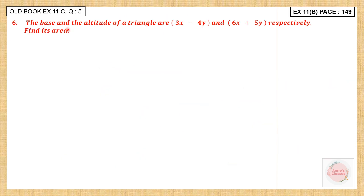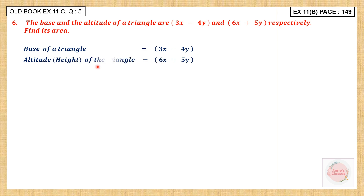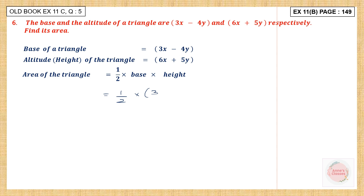Question 5. The base and the altitude of a triangle are given to us. Altitude means the height. So we have the base and the height given to us and we have to find its area. The formula to find the area is half into base into height. So this will be half into base, which is 3x minus 4y, into height, which is 6x plus 5y.